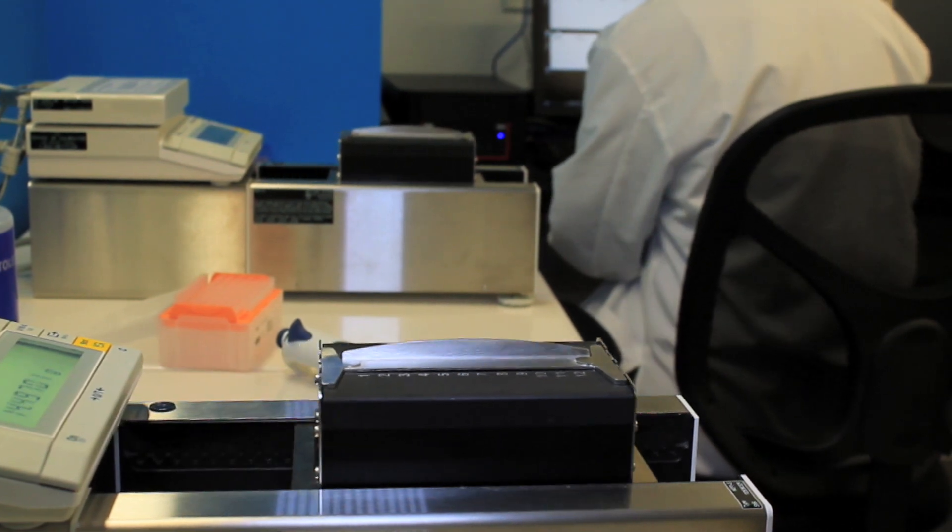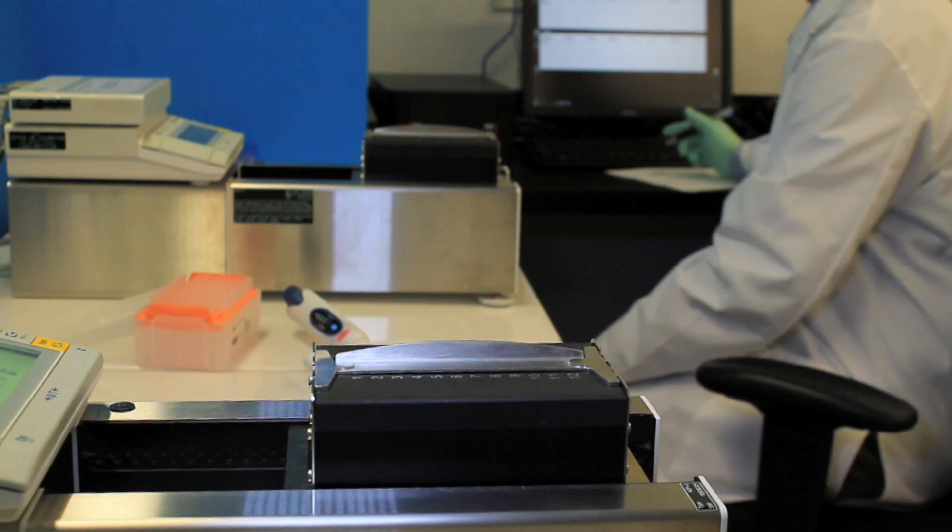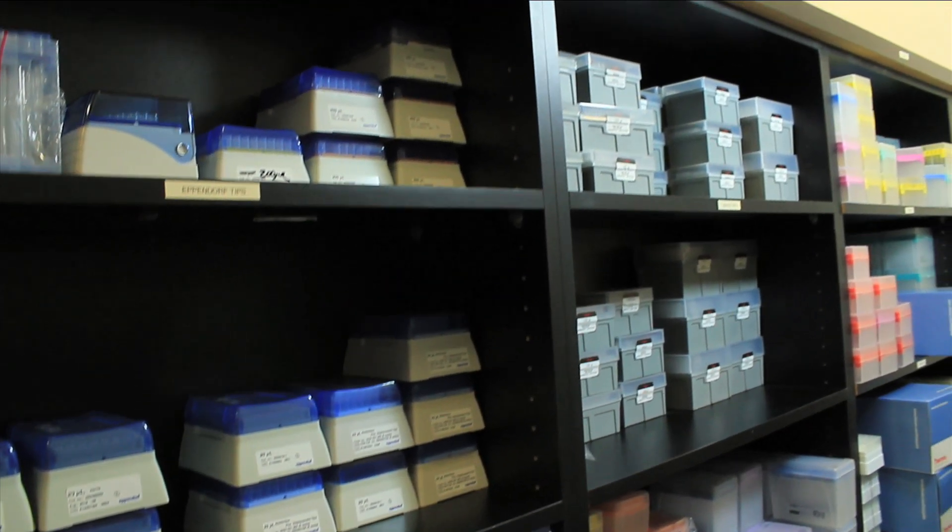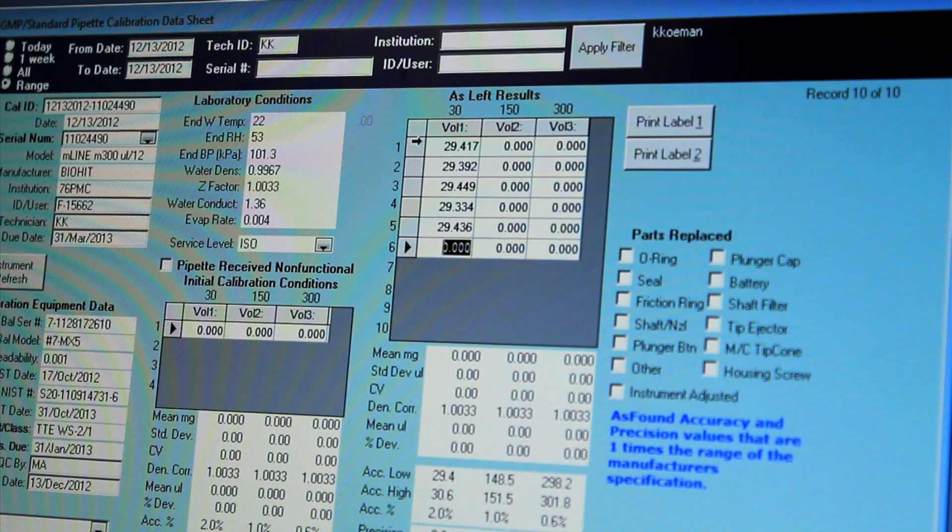Mass measurements are taken on secure and specific balances using the manufacturer's pipette tips, high-grade laboratory test water, and at a controlled temperature. These measurements are then converted to volumetric measurements using our proprietary software and the metric system.